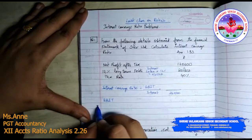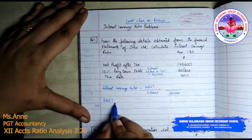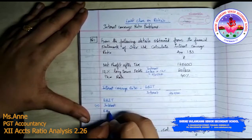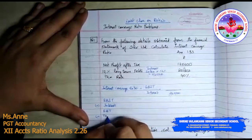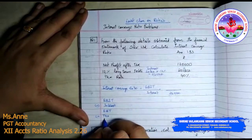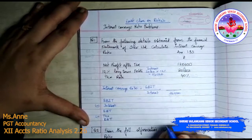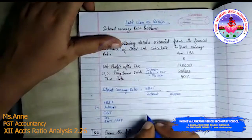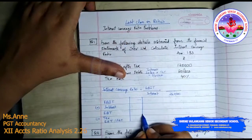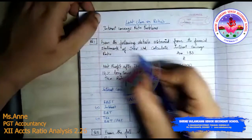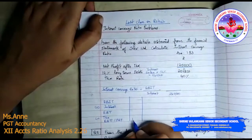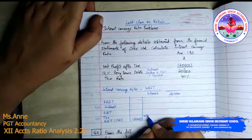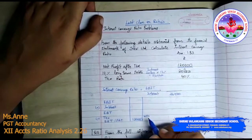Generally this is the format: earnings before interest — you have earnings before tax, less tax, you have earnings after tax, that is profit after tax. So profit after tax given in the question is 1 lakh 20,000. Tax percentage is 40%, and we do not know earnings before interest and tax.